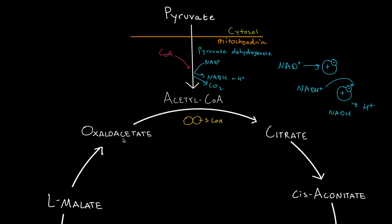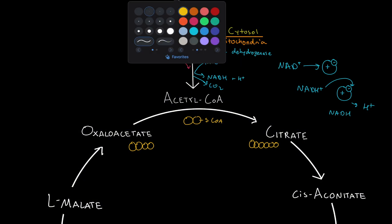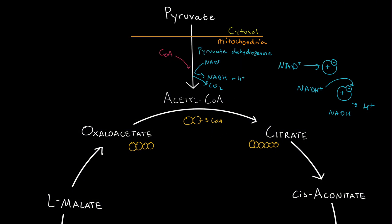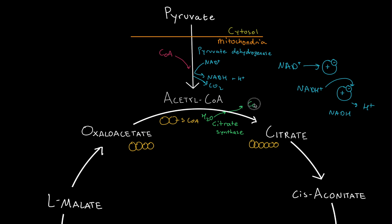To go from acetyl-CoA to citrate, we need oxaloacetate — a four-carbon molecule. Our four-carbon oxaloacetate plus acetyl-CoA results in citrate, which is a six-carbon molecule. The enzyme that performs this action is citrate synthase. Citrate synthase requires an input of water, and this results in the coenzyme being cleaved off, creating our citrate.